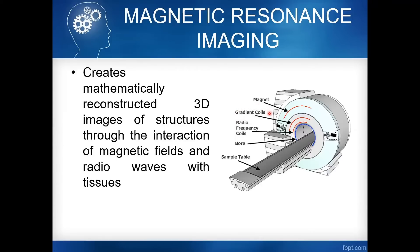Ginagamit ang gradient coils to localize the MRI signal during the measurement. Kaya siya may X, Y, and Z. Kung nalolocalize mo ang signal, of course, kaya mo bumuo ng slices in different locations.